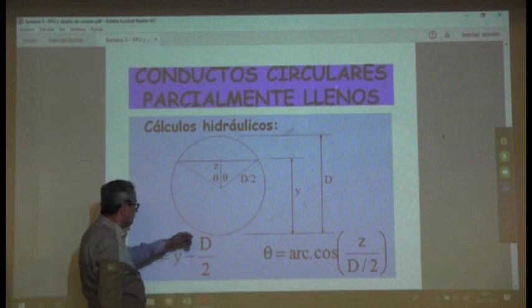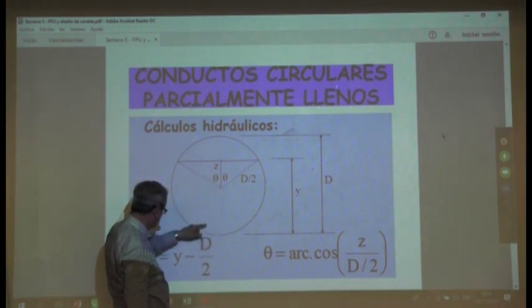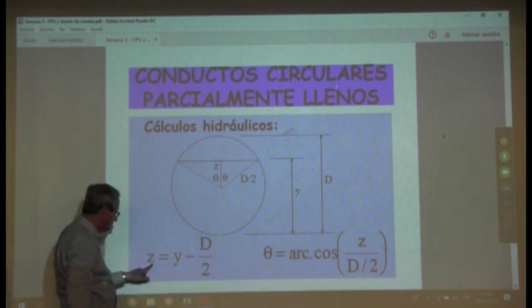Entonces, ¿qué cosa es lo que se dice? Si, por ejemplo, conozco el tirante de agua, y al tirante le resto el radio, o sea, le resto de medios, voy a tener con ello zeta. Zeta será y menos de medios.